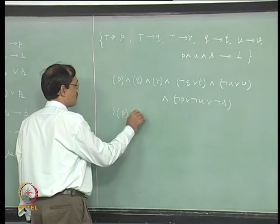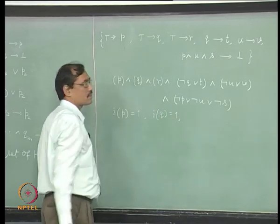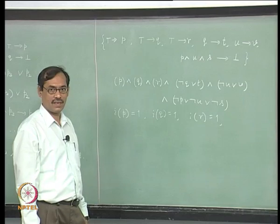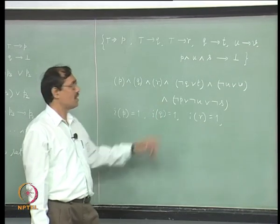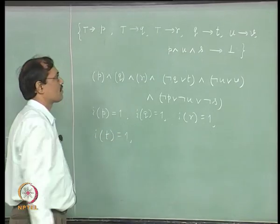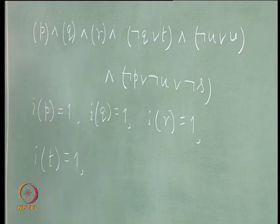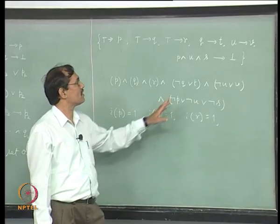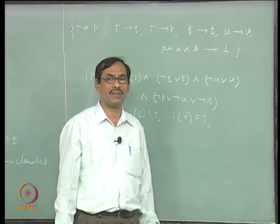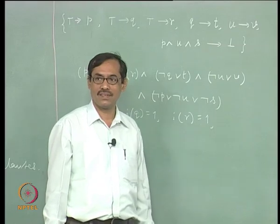Say I is the interpretation. We put I(P) = 1. Next, looking at ⊤ → Q, we say I(Q) = 1. Next, looking at ⊤ → R, we take I(R) = 1. Now Q is already assigned to 1, and Q → T must be 1, so T has to be assigned to 1: I(T) = 1. Then U → V: there is no U assigned yet. You can assign any way you like. We cannot take I(U) = 1 and I(V) = 0; all other combinations are fine. For the time being, we do not worry about it.